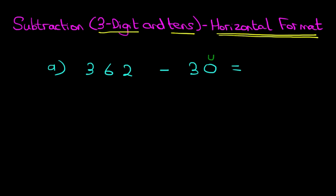And for 362, the two is the units. Now because we are subtracting zero, the two over here will not change. So let's write this down. Does not change. So the two remains the same.